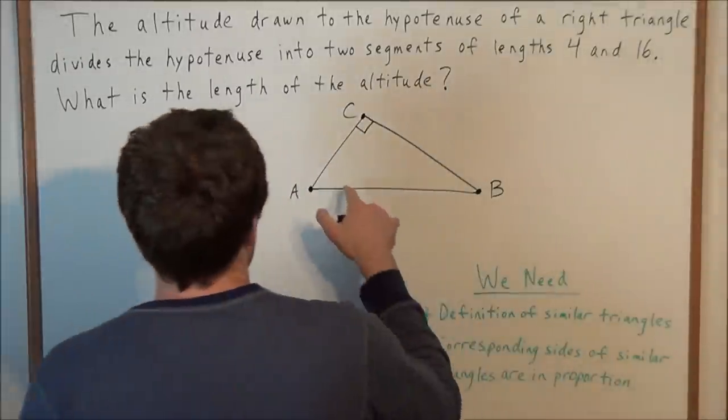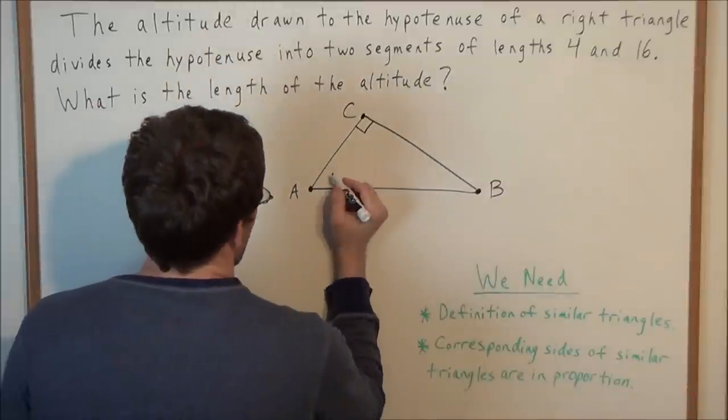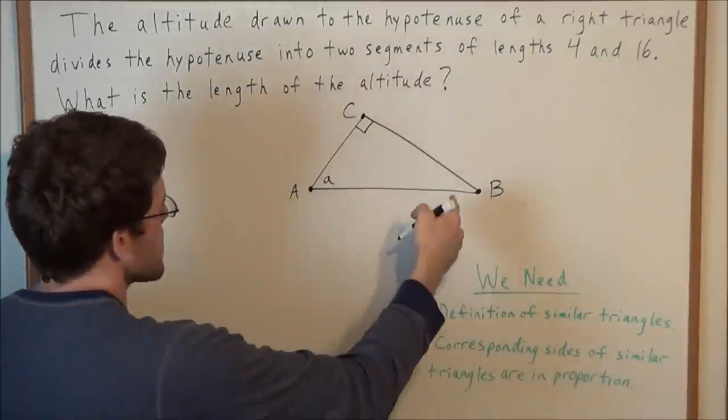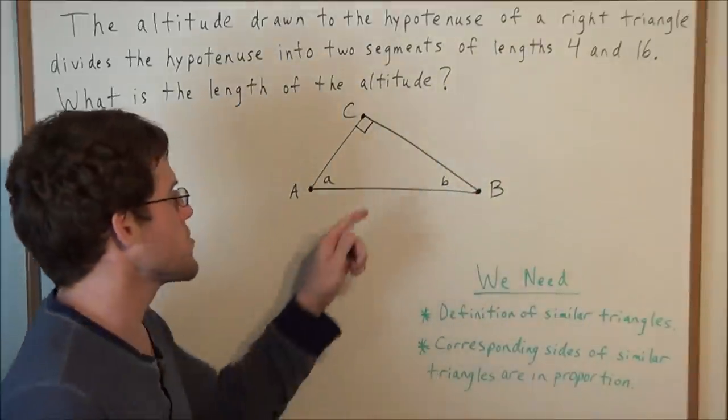So first let's label each of these angles. We'll set the measure of angle A equal to lowercase a and we'll set the measure of angle B equal to lowercase b.